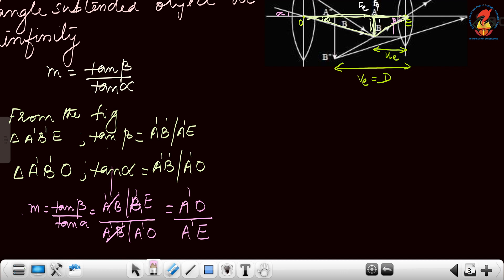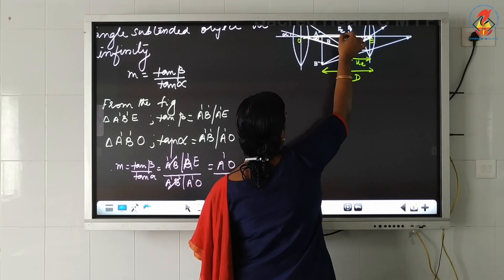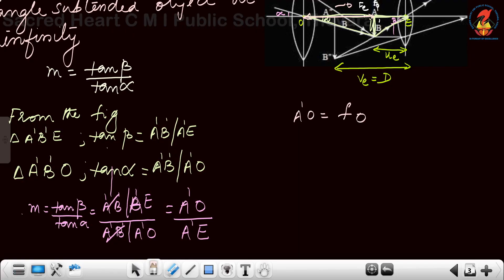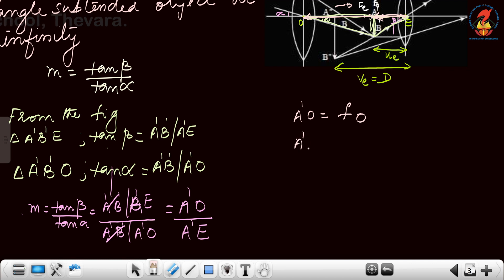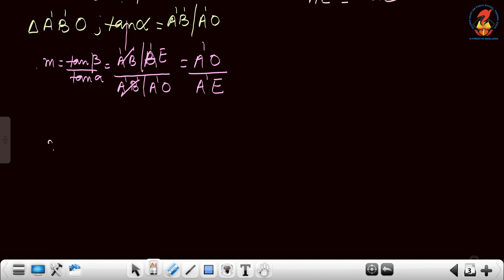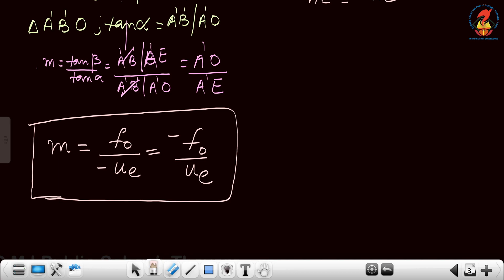Now, what is A'O and what is A'E? Looking at the figure: A'O is the object distance, which we have taken as F0. A'E is the object distance of the eyepiece; taken from the optic centre towards the left, so A'E equals minus UE by sign convention. Therefore, M equals A'O divided by A'E, which gives M equal to minus F0 divided by UE. This is the equation for magnification of a telescope when the image is obtained at the least distance of distinct vision.